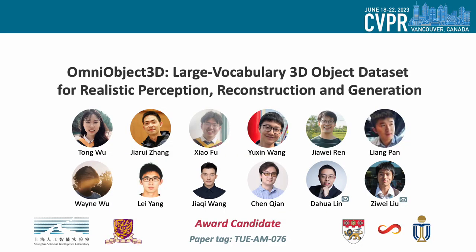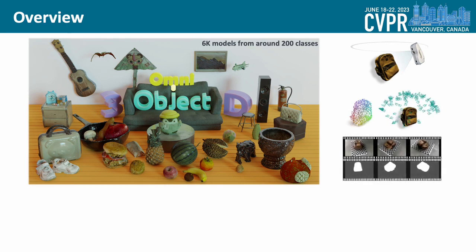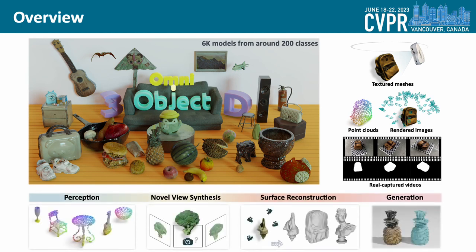We present OmniObject3D, a large vocabulary 3D object dataset for realistic perception, reconstruction, and generation. Our dataset consists of around 6,000 high-quality, real-scanned 3D objects from around 200 classes. For data collection, we utilize professional scanners to obtain high-fidelity textured meshes of each object. Point clouds are sampled on the object surface, and multi-view images are rendered using Blender. We also capture videos and extract foreground masks. With the vast exploration space offered by OmniObject3D, we set up four evaluation tracks: robust point cloud perception, novel view synthesis, surface reconstruction, and 3D object generation. We hope this new dataset can boost research on general 3D object understanding and modeling in the real world.